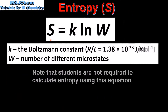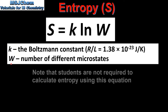Next we'll look at the equation used to calculate entropy. Entropy S equals the Boltzmann constant k multiplied by the natural log of W. The Boltzmann constant is the universal gas constant divided by the Avogadro constant. W is the number of different microstates.